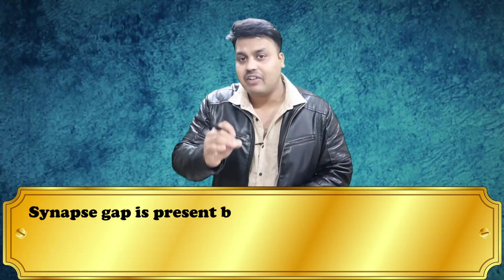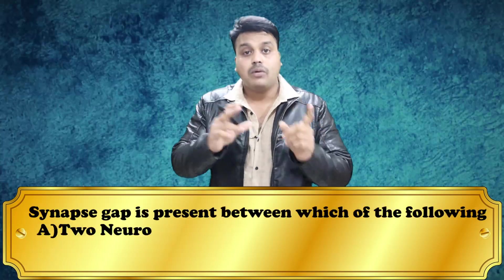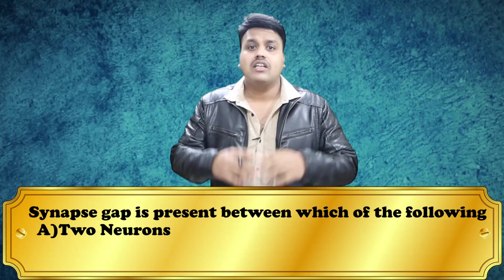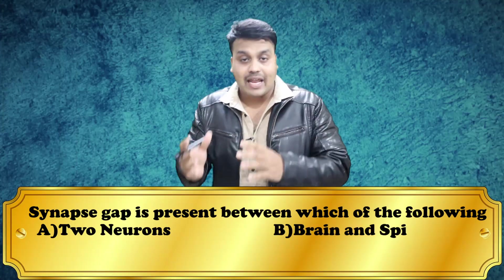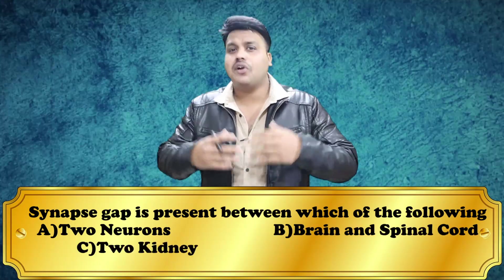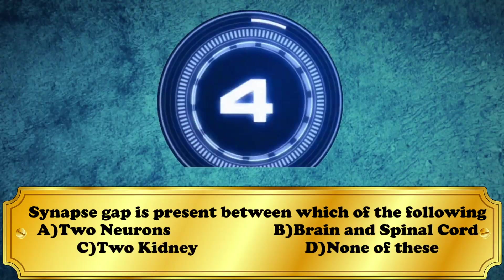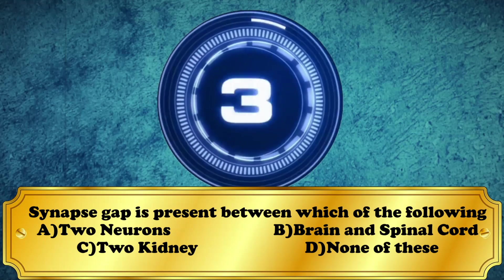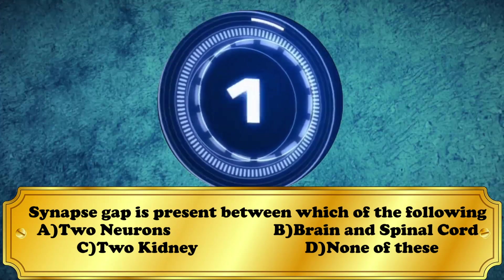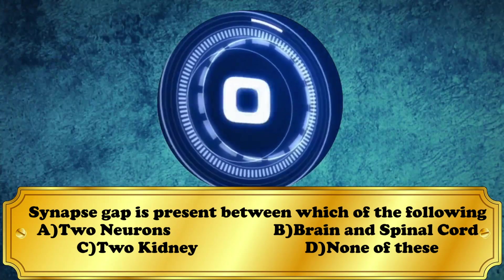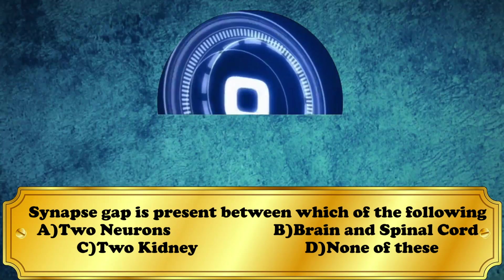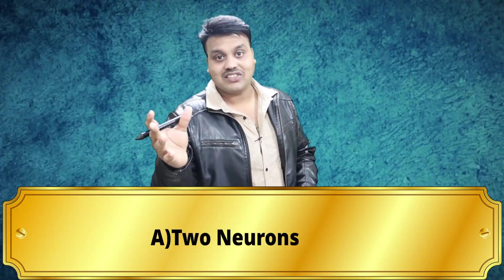From history let's move to science. The synapse gap is seen between which of the following? Two neurons, spinal cord and brain, two kidneys, or none of the above. The correct answer is two neurons.